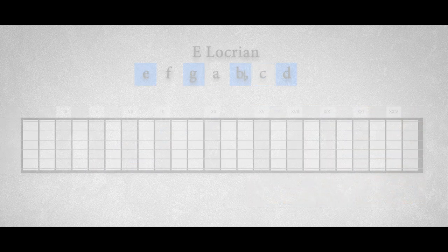And for the E Locrian mode, we can outline the four note pattern of an E half diminished chord, starting on the minor 7th.